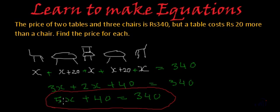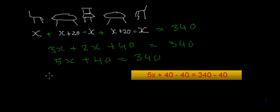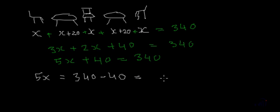This is the equation which we have formed, and now we will solve this. So from here, if we subtract 40 from both sides, on the left hand side we will get 5x will be equal to 40 minus 40 will get cancelled, 340 minus 40, which is equal to 300.